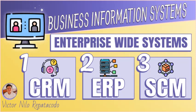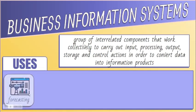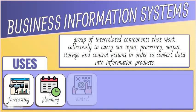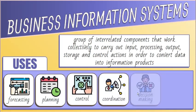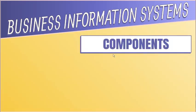Business Information System is defined as a group of interrelated components that work collectively to carry out input, processing, output, storage, and control actions in order to convert data into information products that can be used to support forecasting, planning, control, coordination, decision-making, and operational activities in an organization.